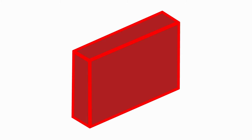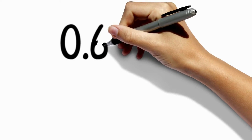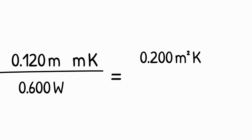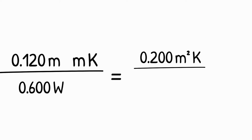Okay, let's assume we have a 12 centimeters thick outer layer, and 12 centimeters are 0.12 meters. We put this over the thermal conductivity of this material, which is 0.6 watt per meter kelvin. That gives us the resistance of this layer of 0.2 square meters kelvin over watt.